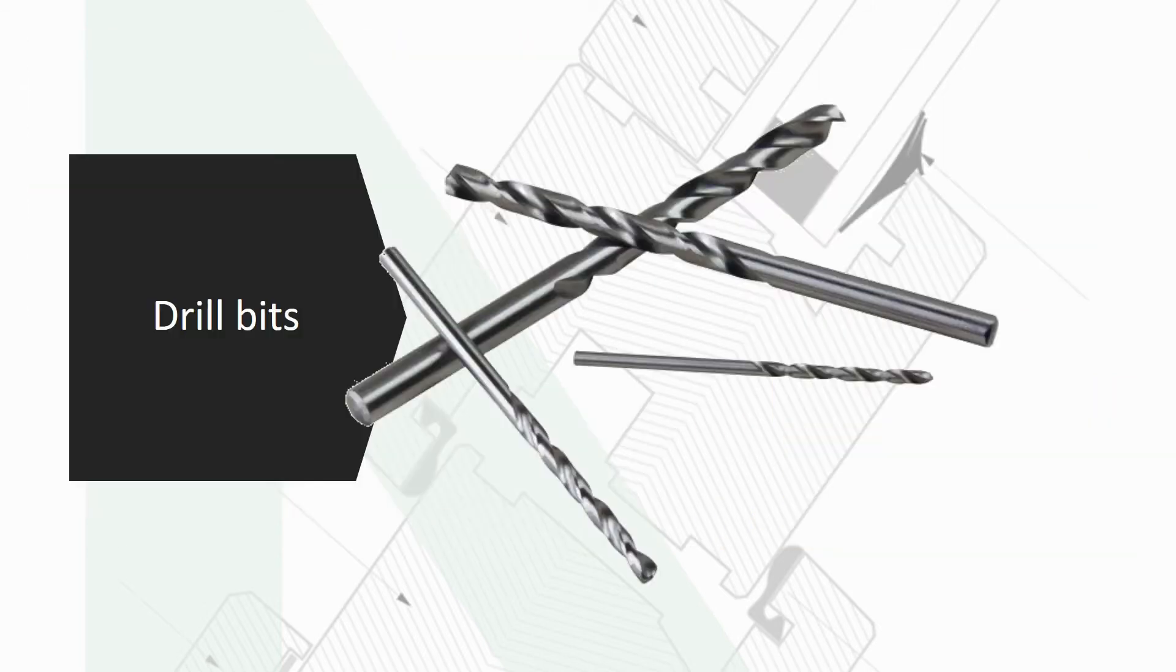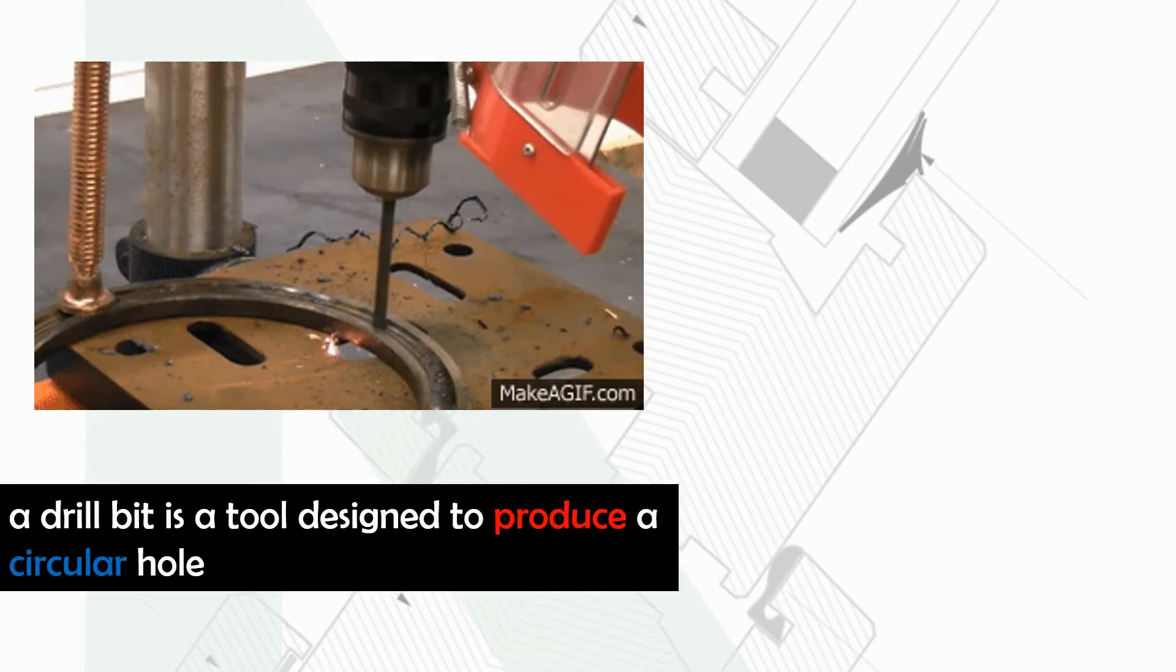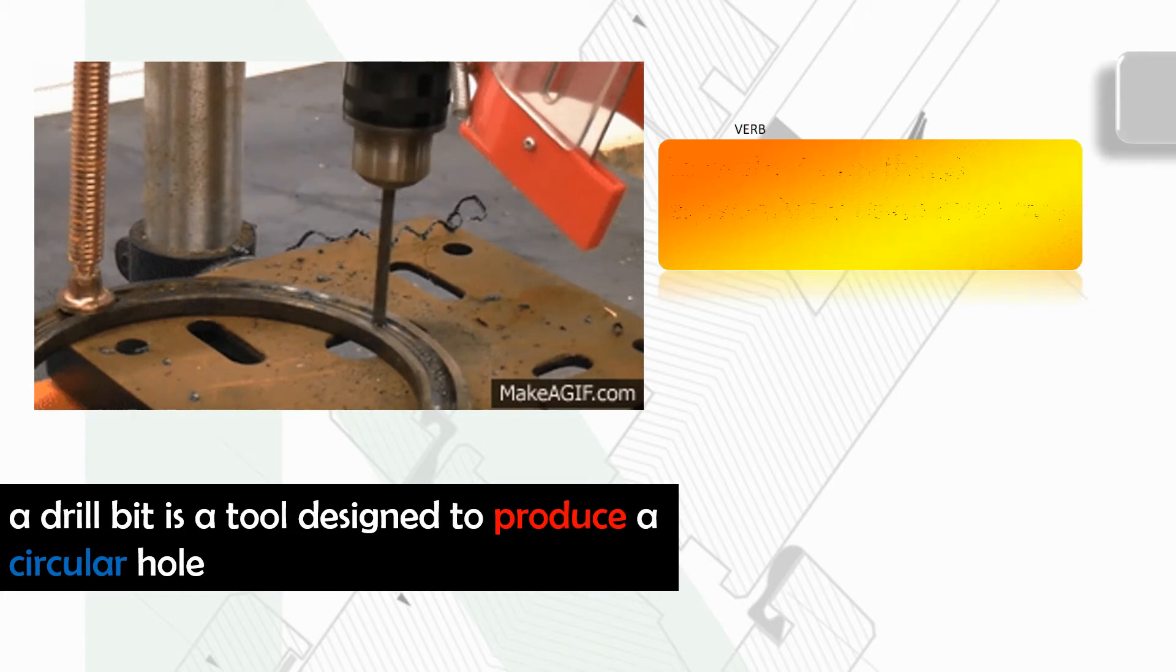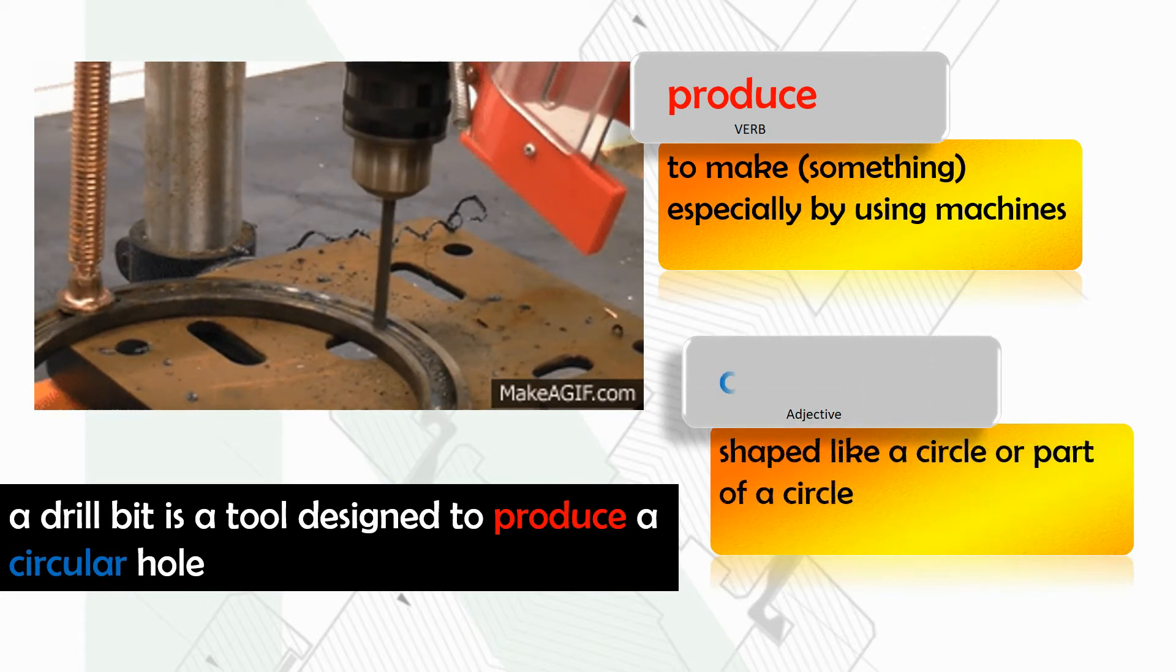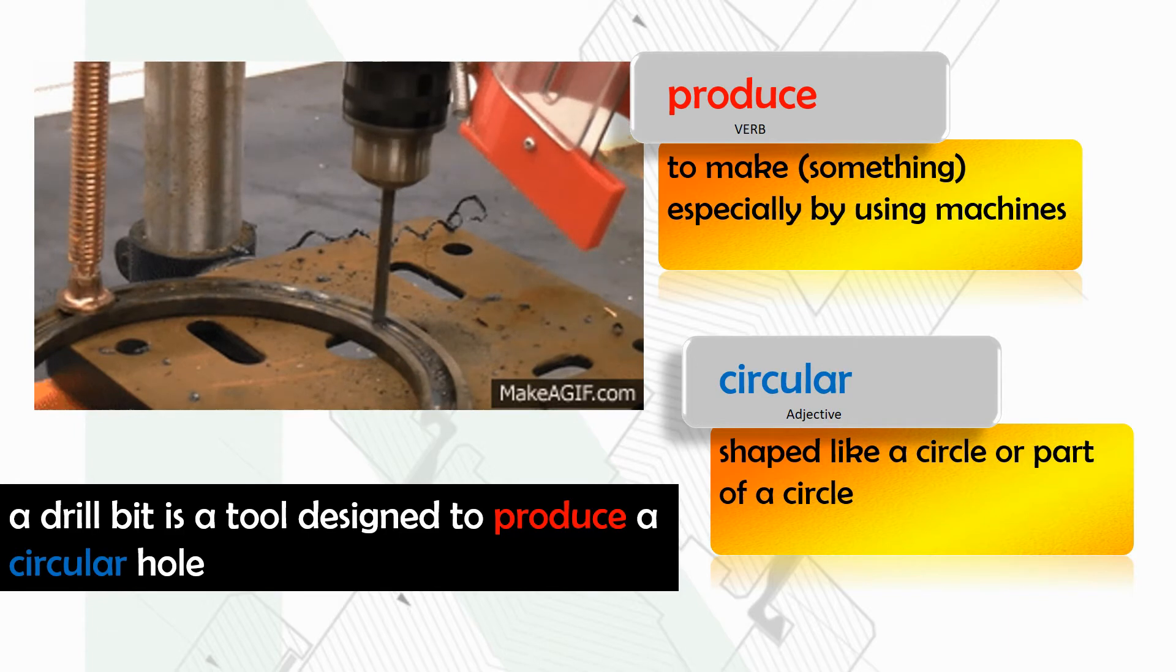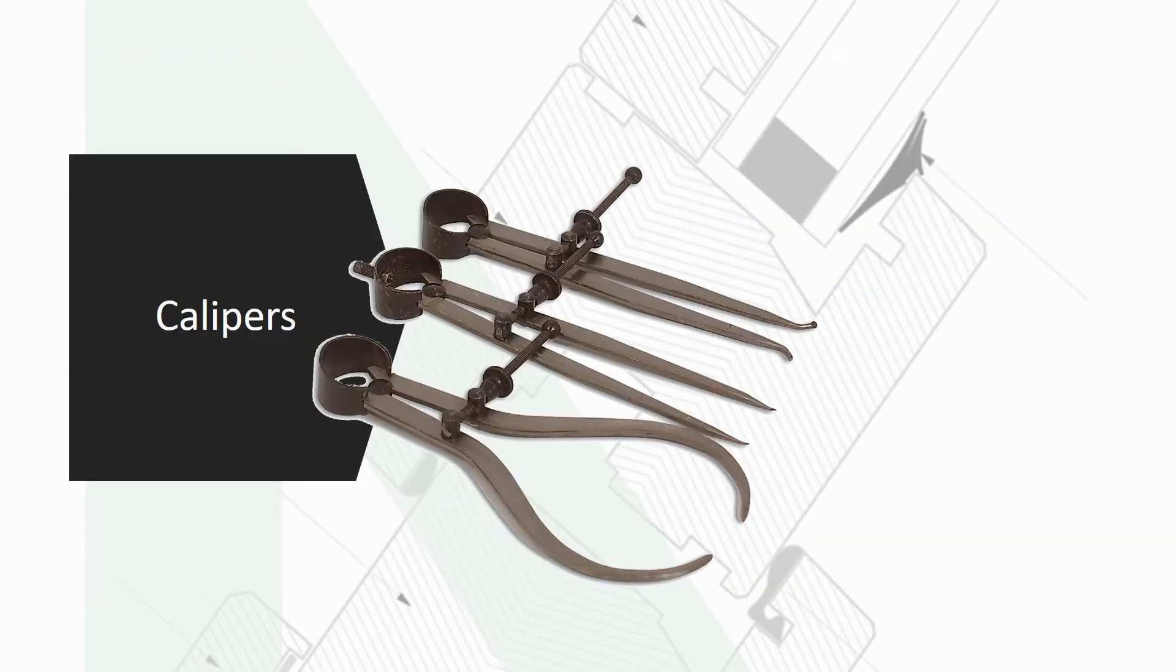Drill bits. A drill bit is a tool designed to produce a circular hole. Produce means to make something, especially by using machines. Circular means it's shaped like a circle or part of a circle.